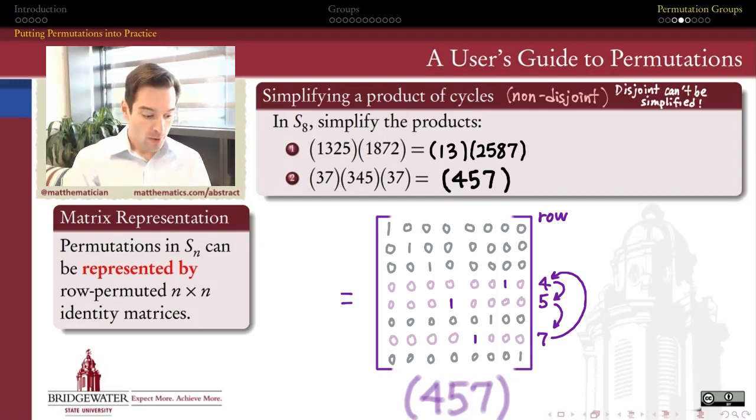So a couple of videos ago, we saw that when we combine this product of cycles, (3,7)(3,4,5)(3,7), it turns out that the result, (4,5,7), is an awful lot like the (3,4,5) which we had in the middle here. This is an example of something called a conjugacy of permutations, and it's something I want to talk about in this video extra.